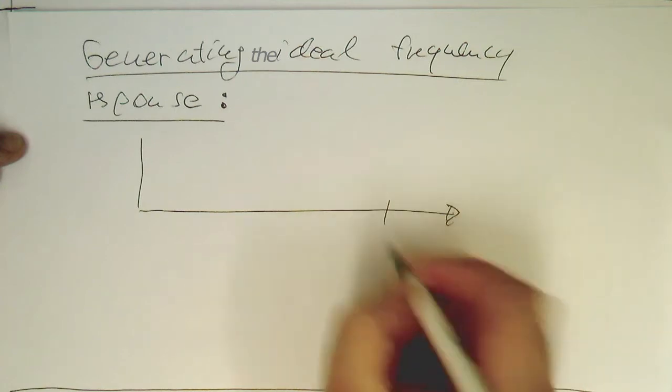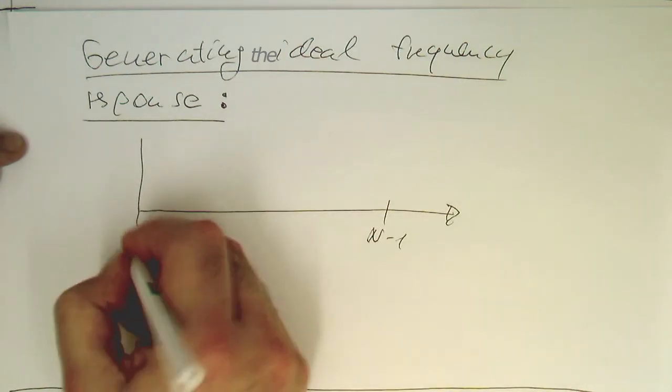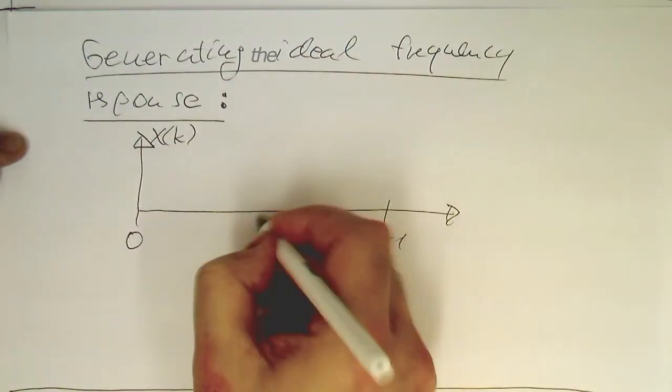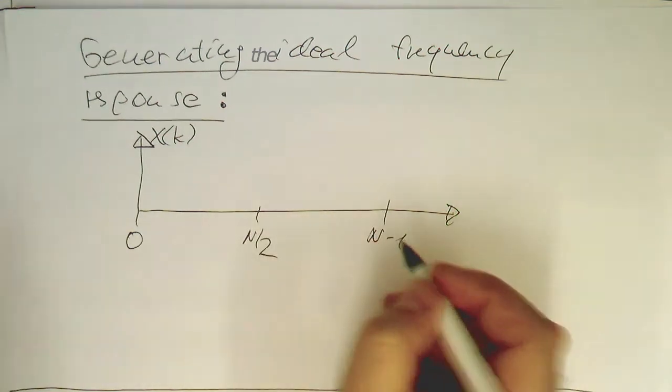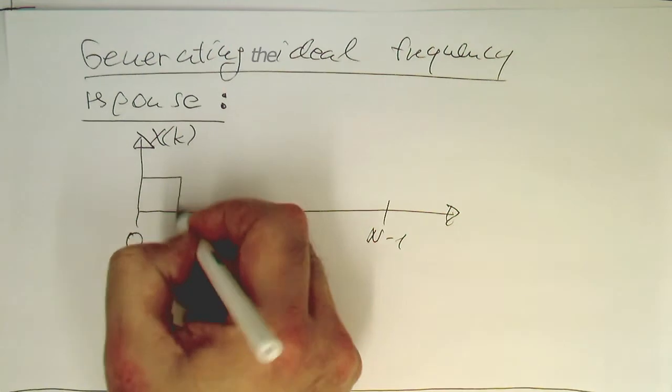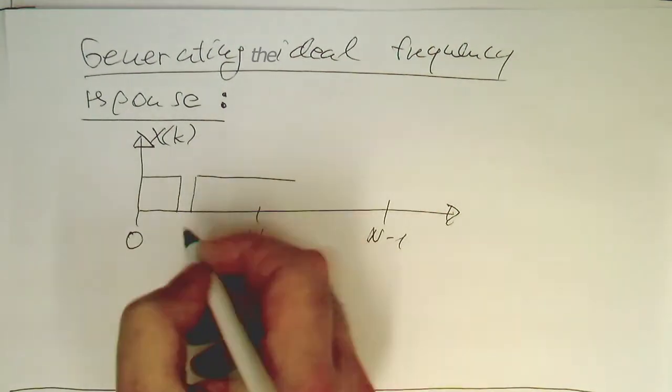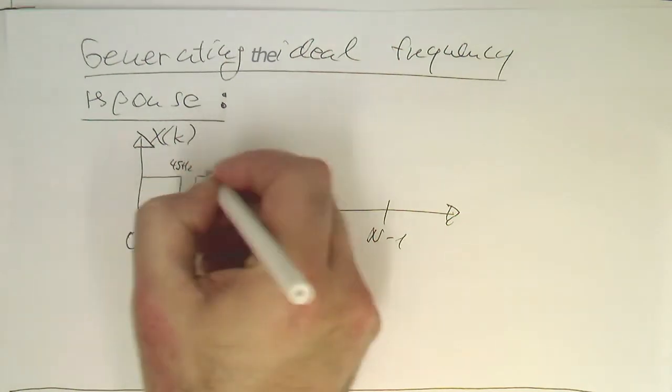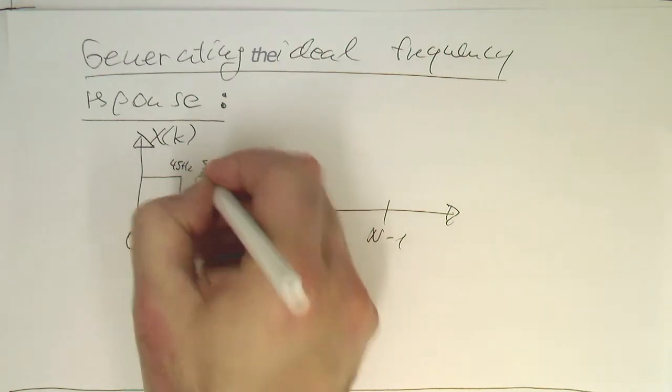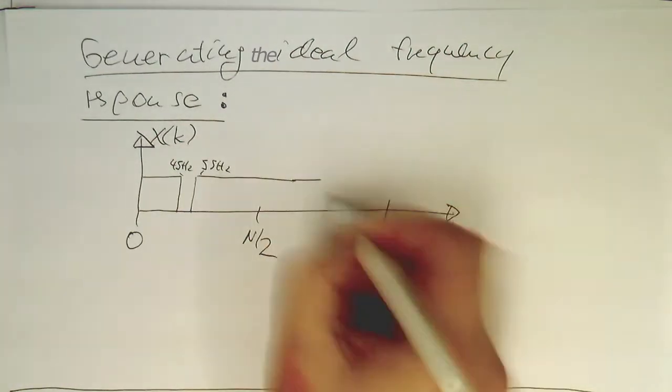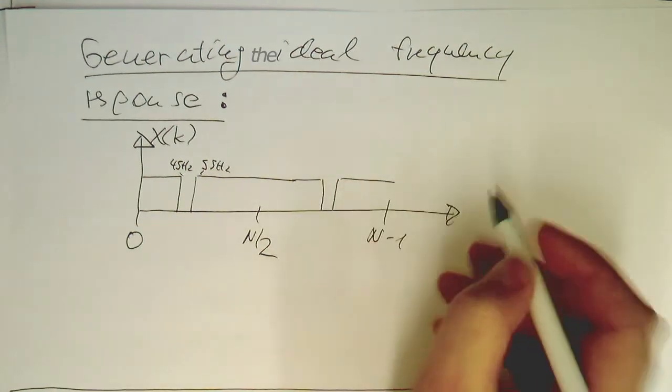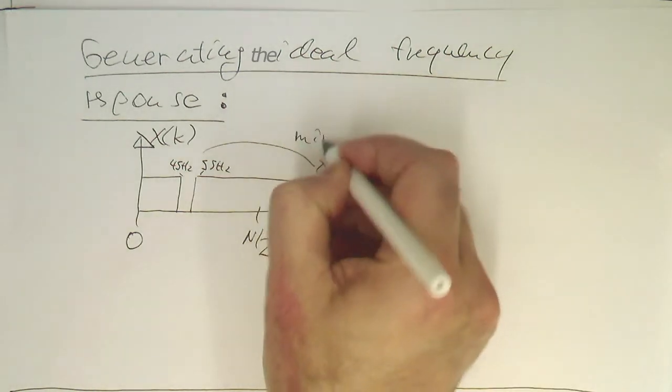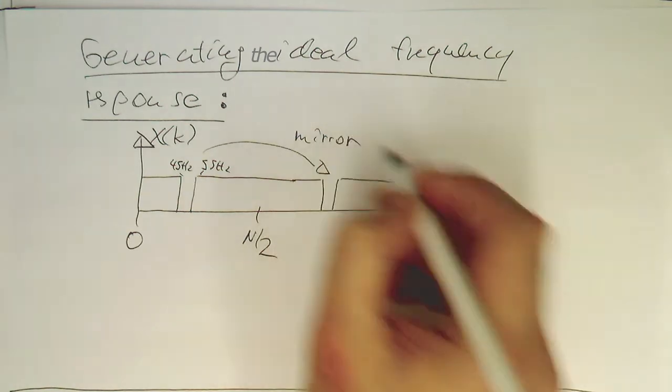Yeah, so let's say this is n minus 1. This is 0 here. And this is here our x of k. And that's here n half, so the midpoint. Then again, we would like to generate a response like that, that we have here for example 45 Hz and there 55 Hz on this edge here. And then we've got our mirror on the other side. Again here, our mirror frequencies is the same. So that's our mirror frequencies here.